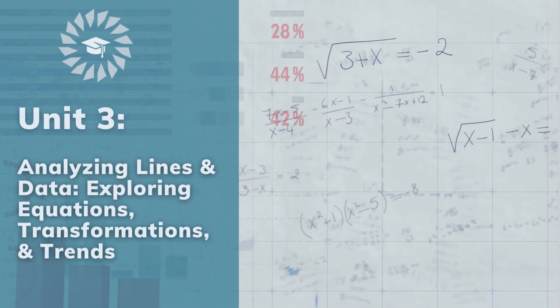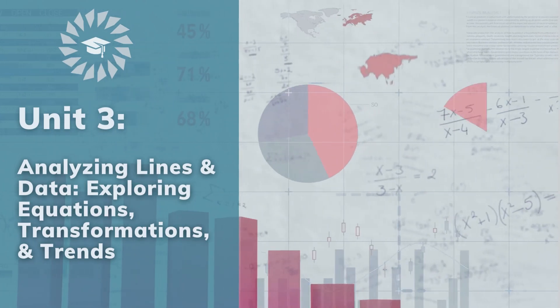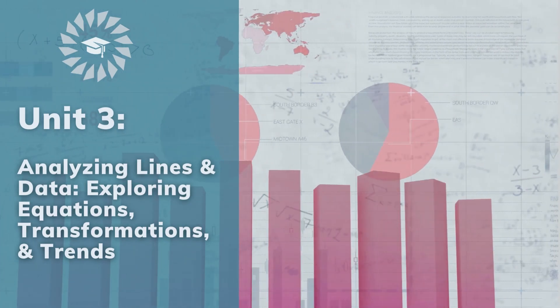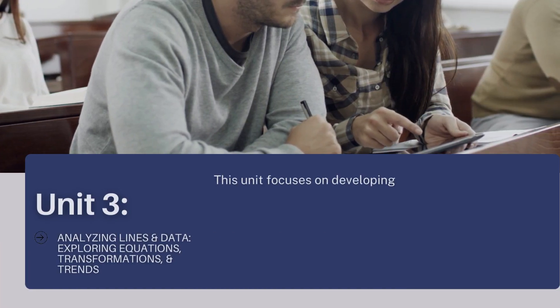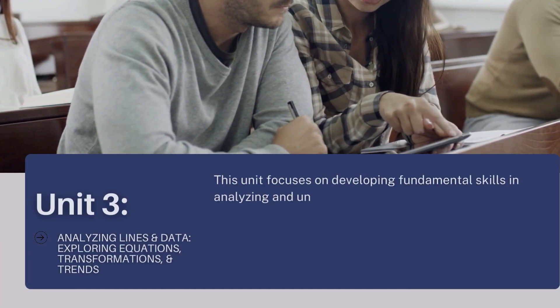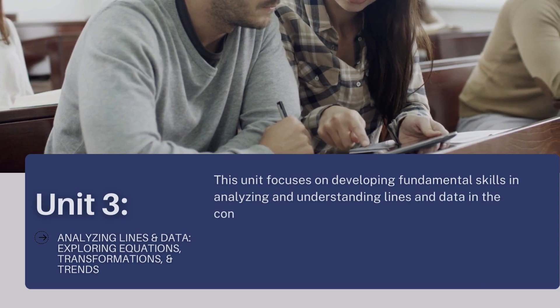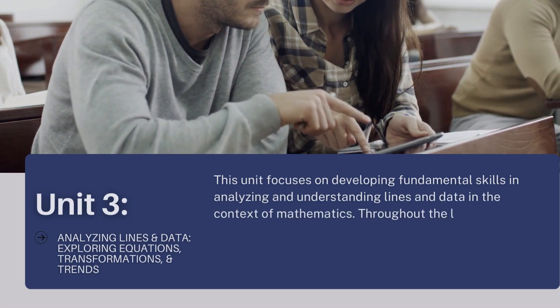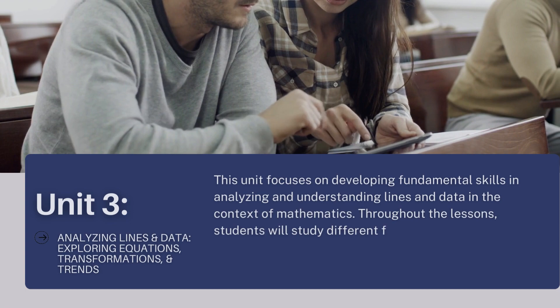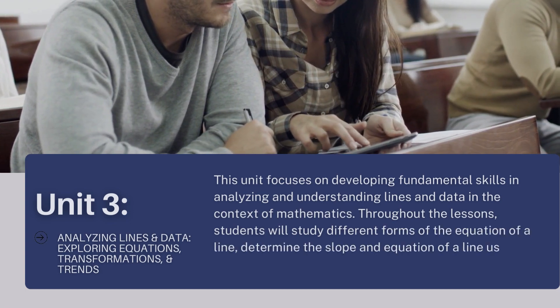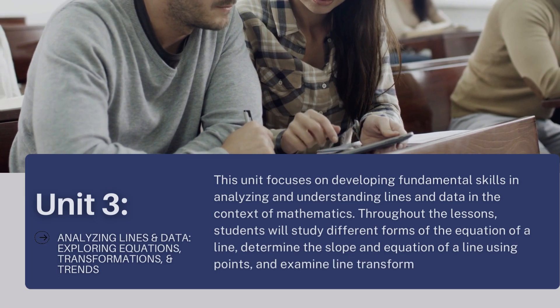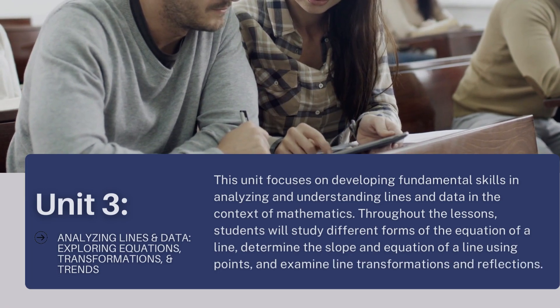Unit 3, Analyzing Lines and Data, Exploring Equations, Transformations, and Trends. This unit focuses on developing fundamental skills in analyzing and understanding lines and data in the context of mathematics. Throughout the lessons, students will study different forms of the equation of a line, determine the slope and equation of a line using points, and examine line transformations and reflections.